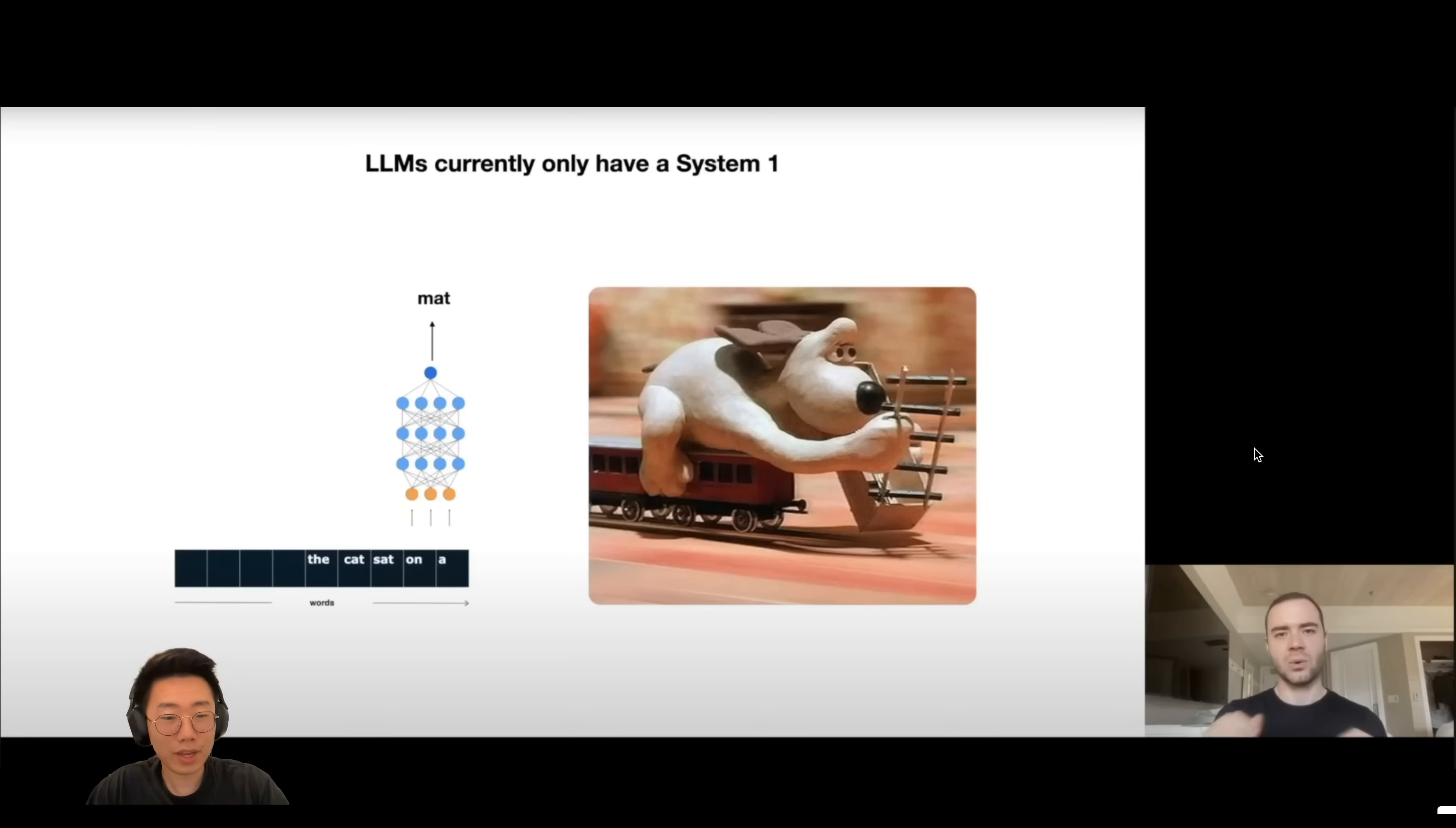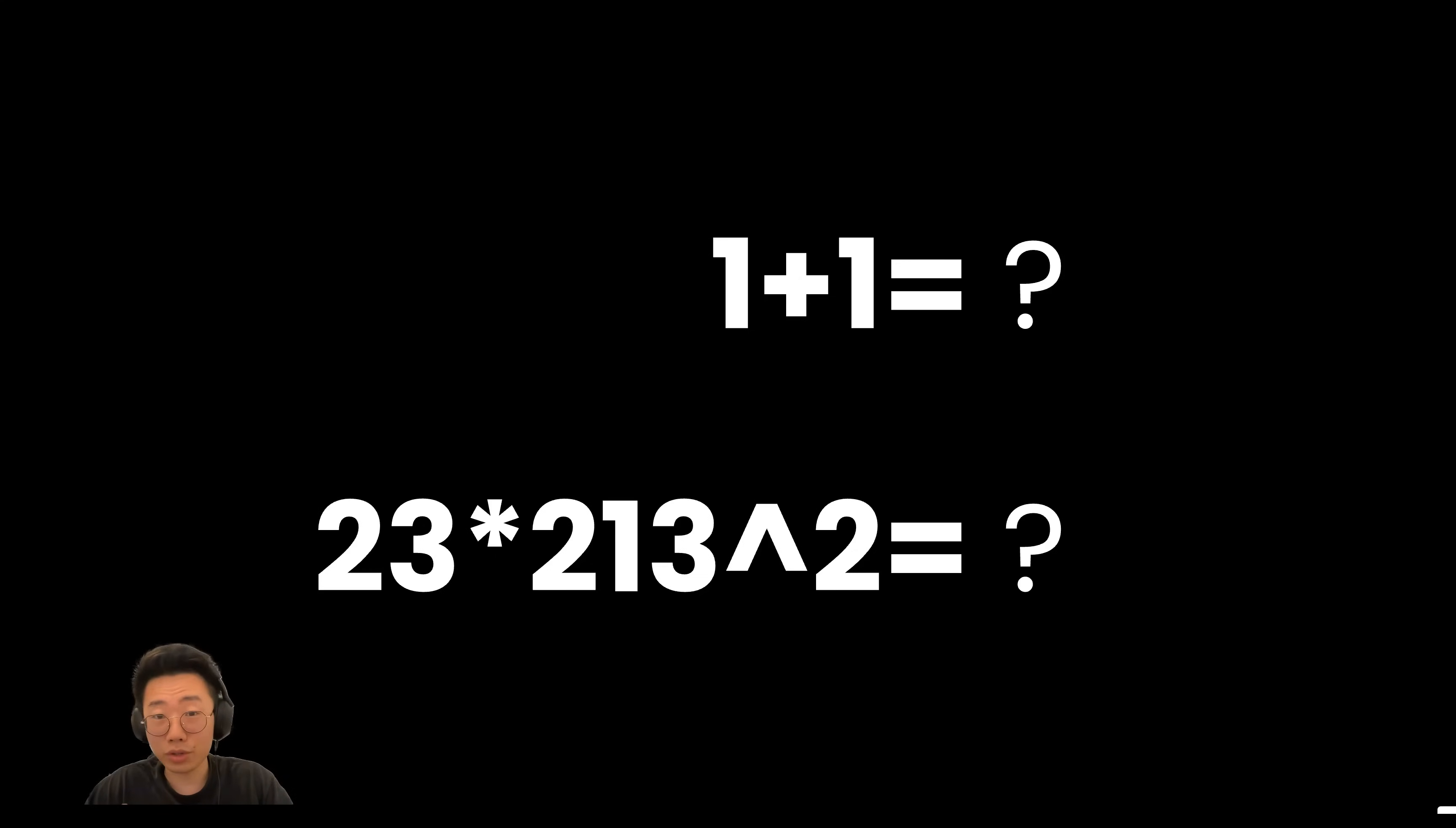And in a video from Andrew Karpathy, he had a really good analogy that the way large language models currently work, it's almost like you are on a running train but also building the trail in front of you at the same time. So to large language models, they literally know no difference between answering what's one plus one versus complex mathematics formulas.